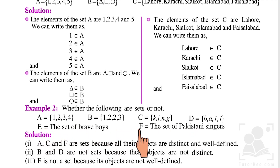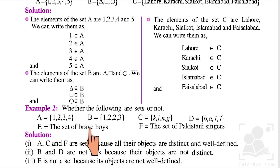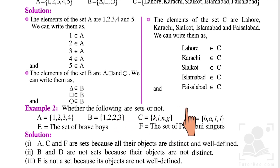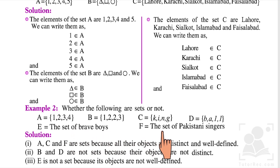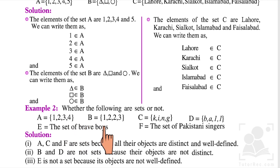A, C, and F are sets because all the objects are distinct and well-defined. E is not a set because its objects are not well-defined. This is all for today's lesson; we will be back with another lesson.